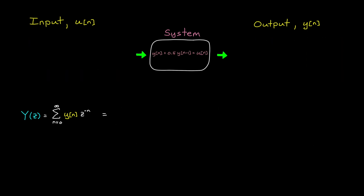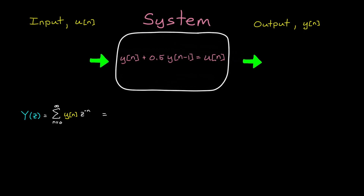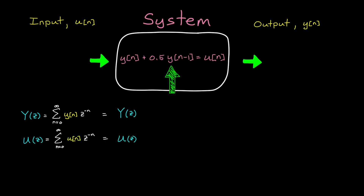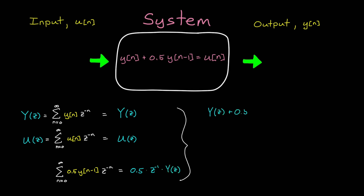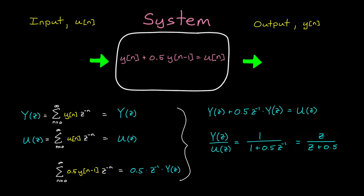We can also take the Z-transform directly on a difference equation. For example, let's say the system is described by a difference equation where the input is some arbitrary signal U and the output is Y. We can take the Z-transform of both sides. The Z-transform of Y of N is just Y of Z, and U of N becomes U of Z. For the middle term, we're adding 0.5 times the output Y delayed by one sample, and a delay is just Z inverse — so this becomes 0.5 times a delayed Y of Z. With a little algebra, we get the Z-domain representation of this difference equation.